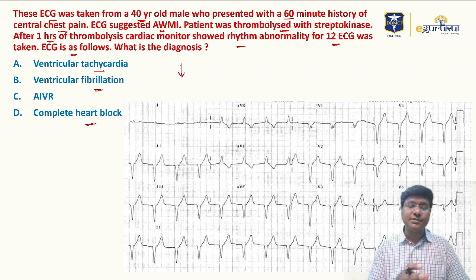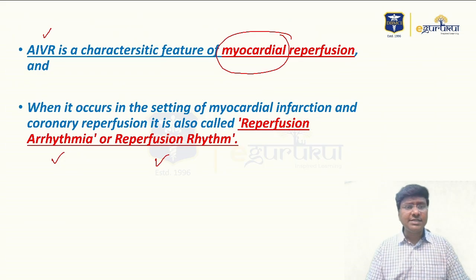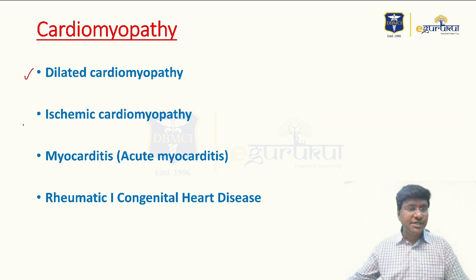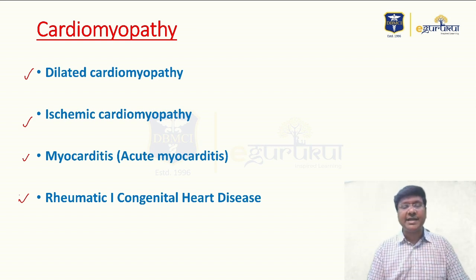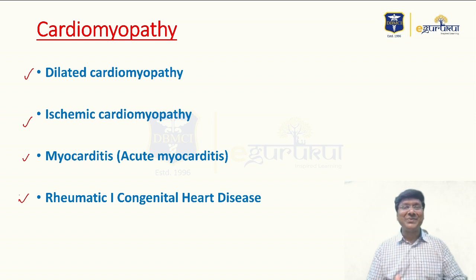AIVR is a reperfusion rhythm occurring immediately after thrombolysis. It can also be seen in patients with dilated cardiomyopathy, ischemic cardiomyopathy, myocarditis, and rheumatic or congenital heart disease.